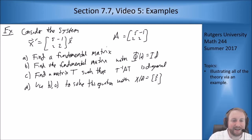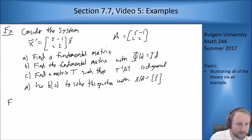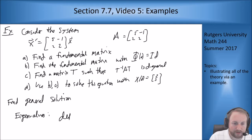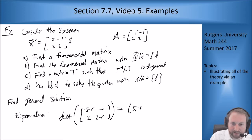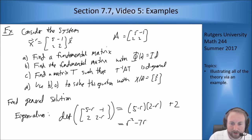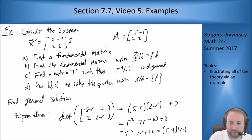So to find a fundamental matrix I need the general solution. To find the general solution I need eigenvalues. The determinant of [[5-r, -1], [2, 2-r]] equals (5-r)(2-r) + 2, which is r² - 7r + 10 + 2, giving r² - 7r + 12, which factors as (r-4)(r-3). So my eigenvalues are 4 and 3.